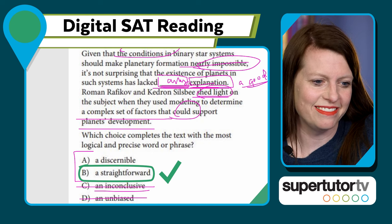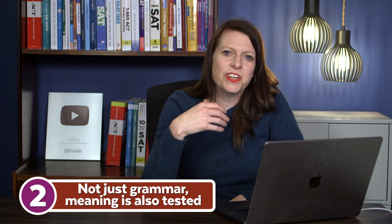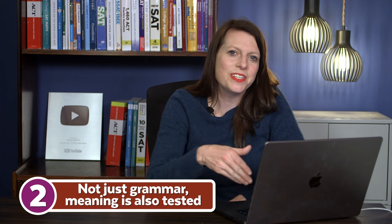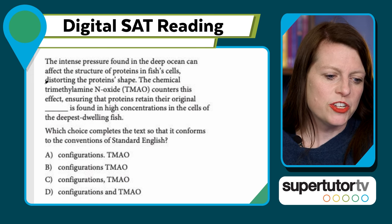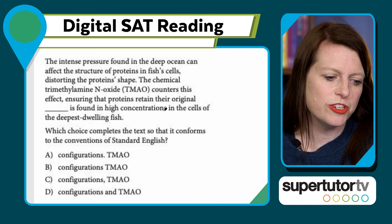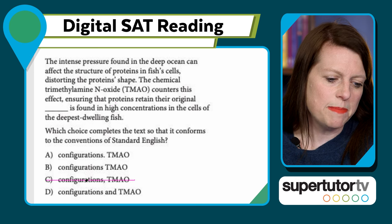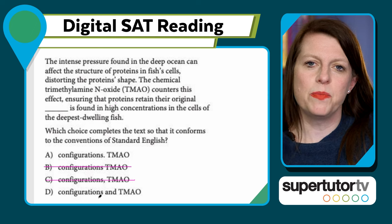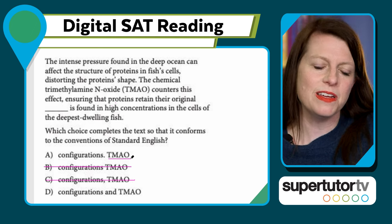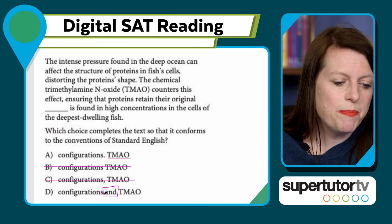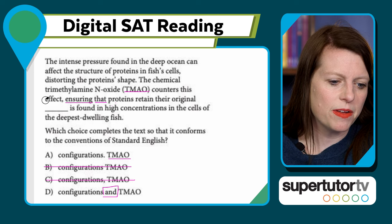Second thing: they're now testing whether 'and' is the appropriate word to use — not just grammatically correct, but the right word. Here's an example: 'The intense pressure found in the deep ocean can affect the structure of proteins in fish cells, destroying the protein shape. The chemical TMAO counters this effect, ensuring that proteins retain their original configurations. TMAO is found in high concentrations in the cells of the deepest-dwelling fish.' Options C and B are run-ons, but A and D are grammatically correct — so I can't just look at grammatical correctness.